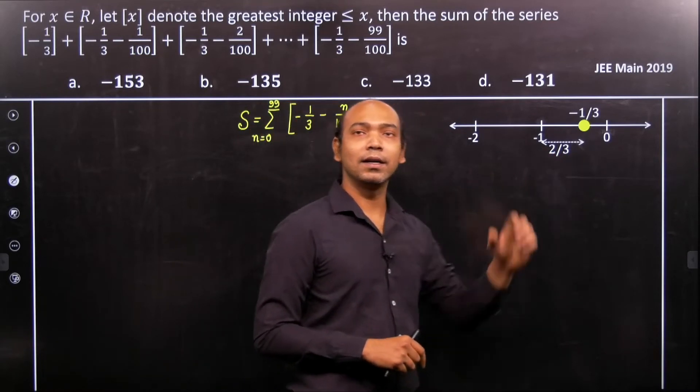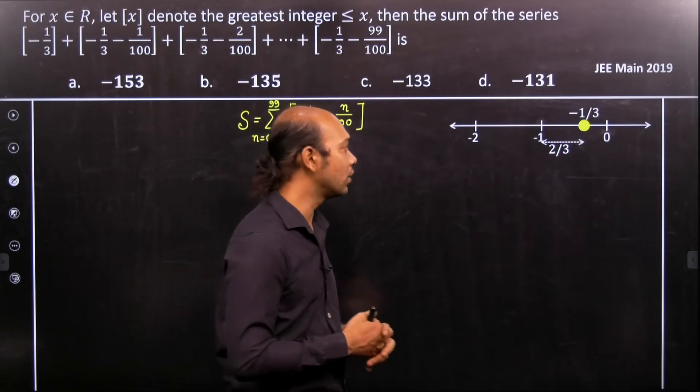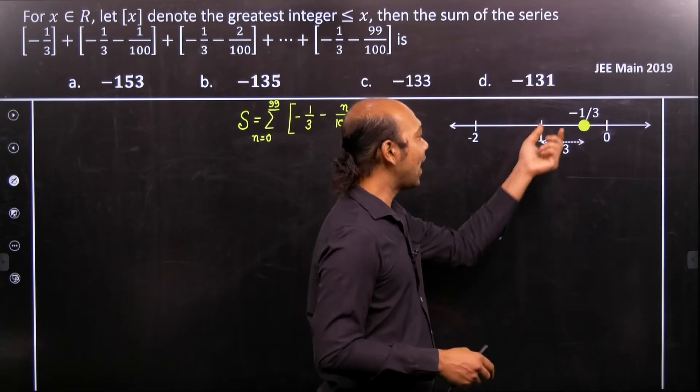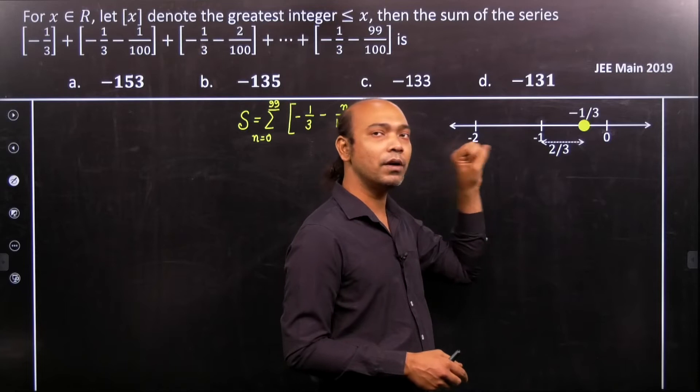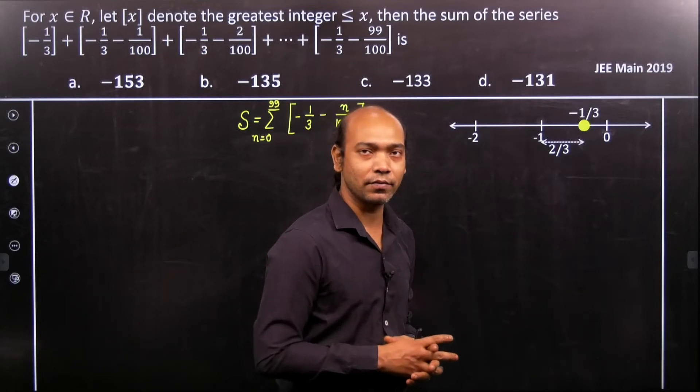Now let's look at the number line and graphs. Here this value is 1 by 3, and we're always subtracting some number from it because n by 100 is always positive.